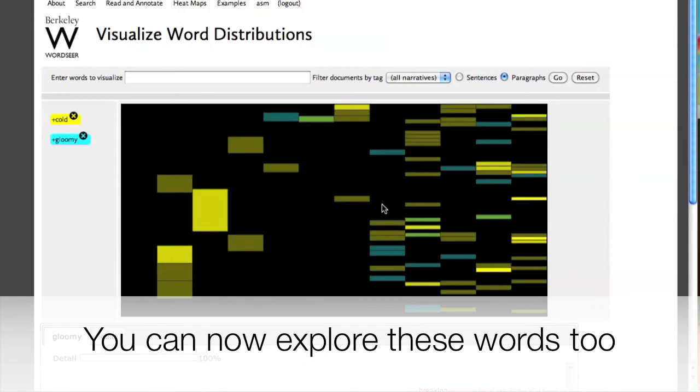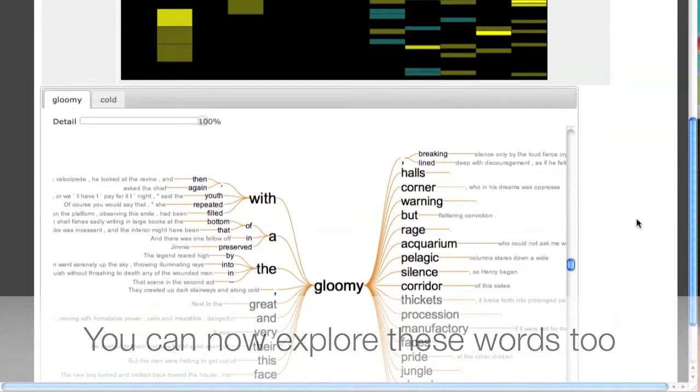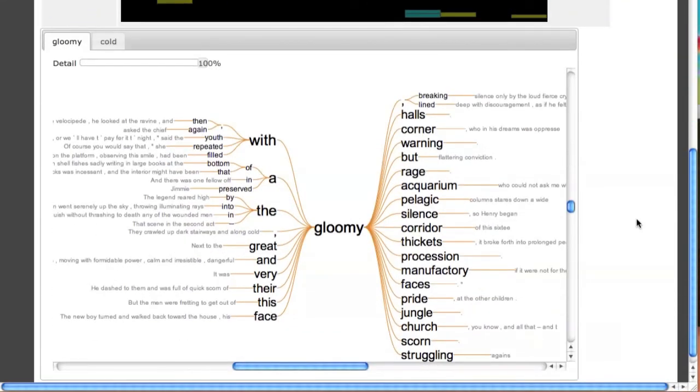Clicking on them adds them to a heat map query. When we hit go, we see those words as well, which we can now explore.